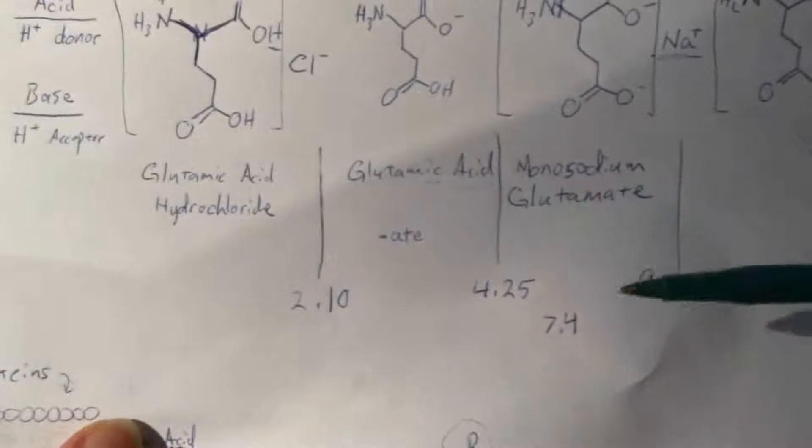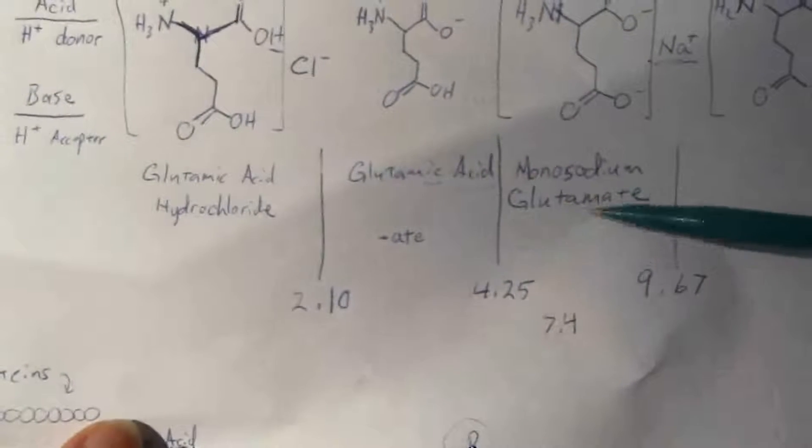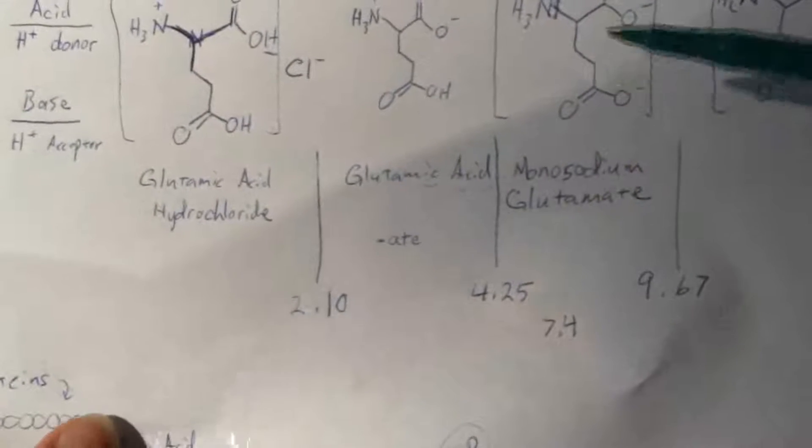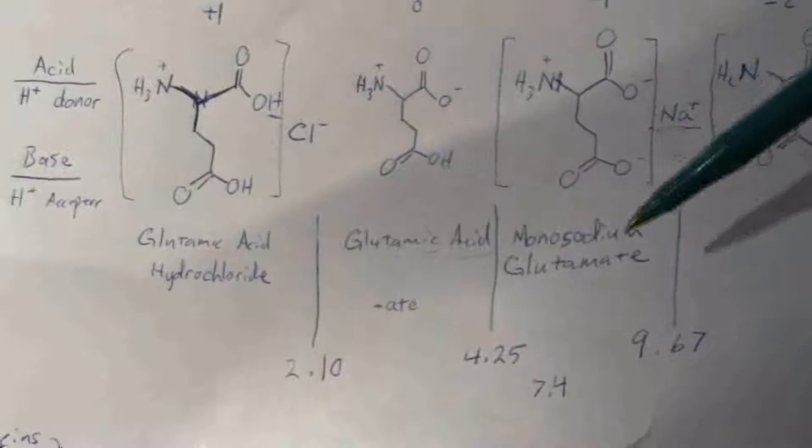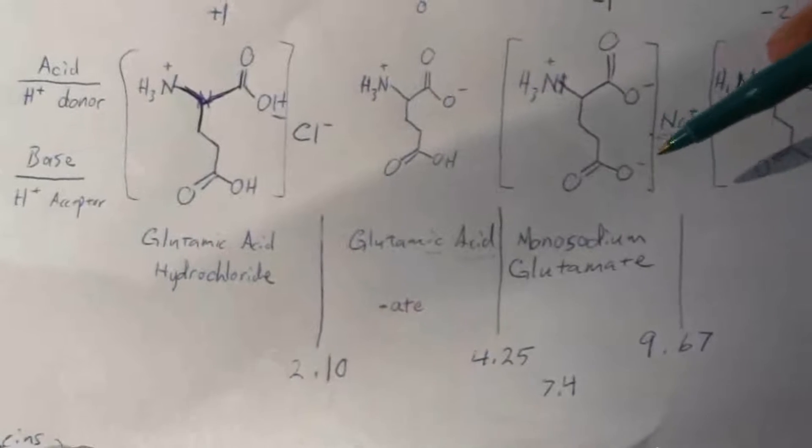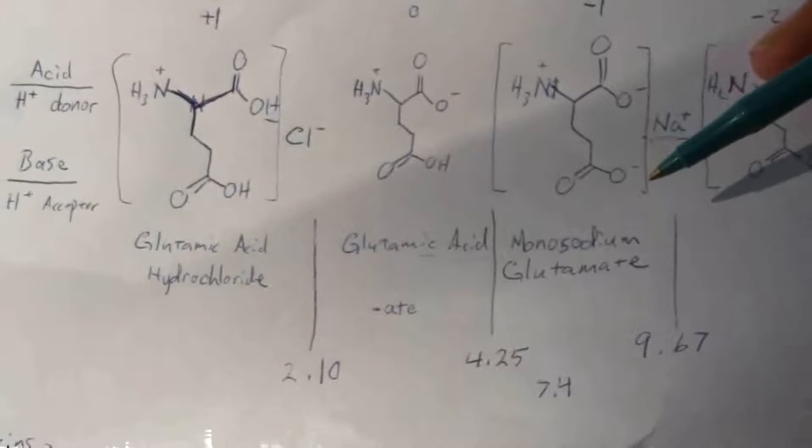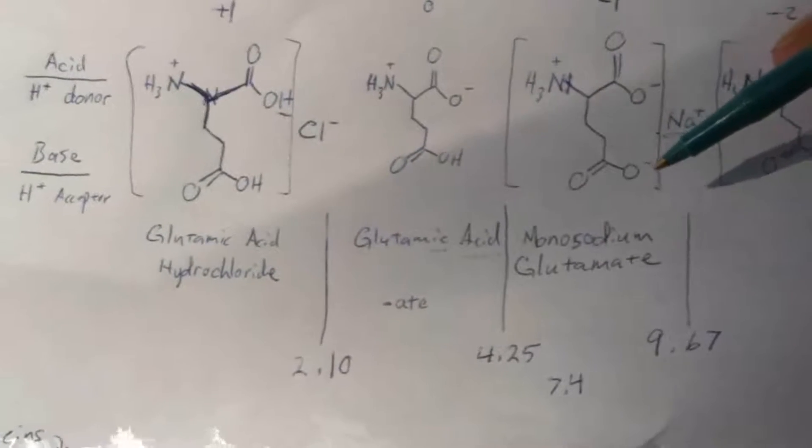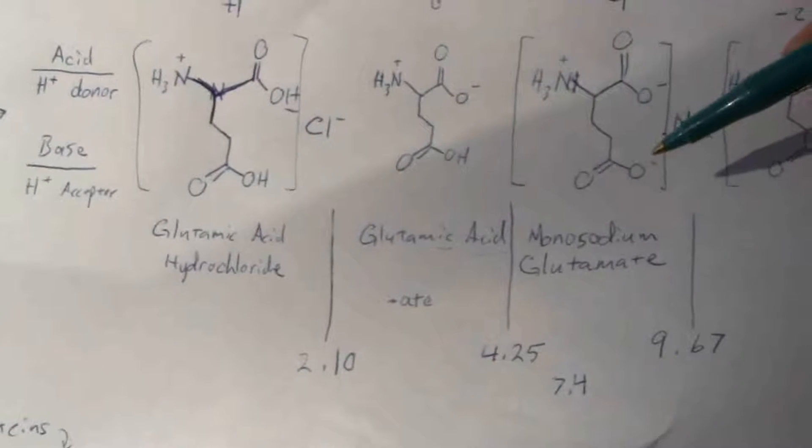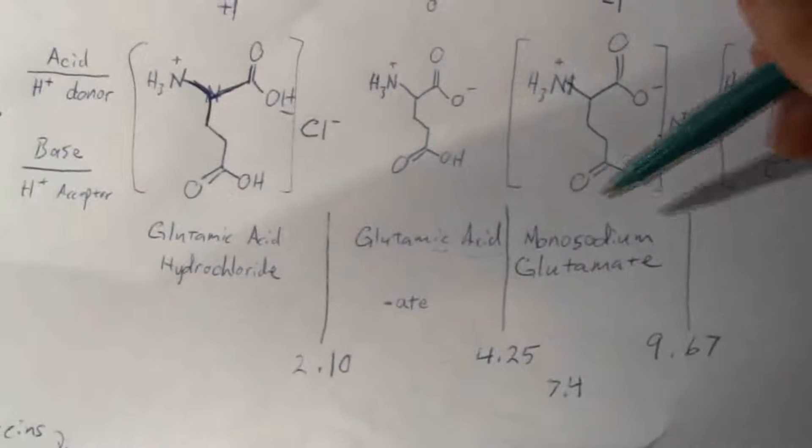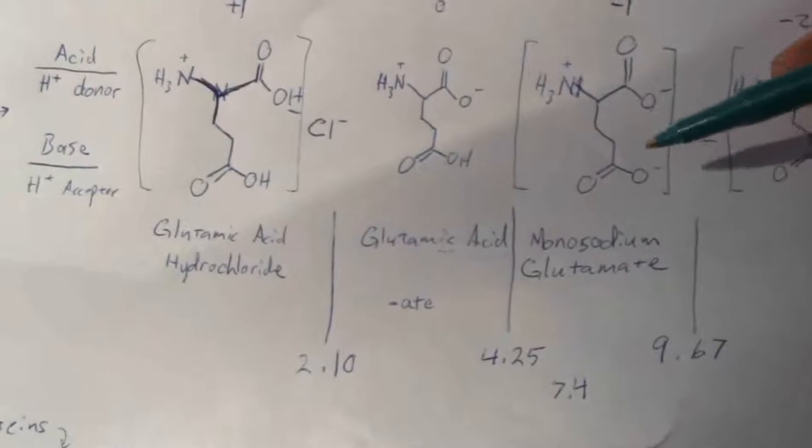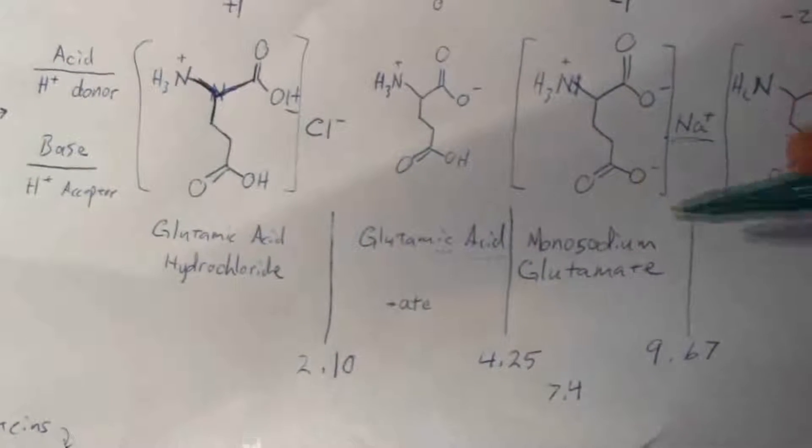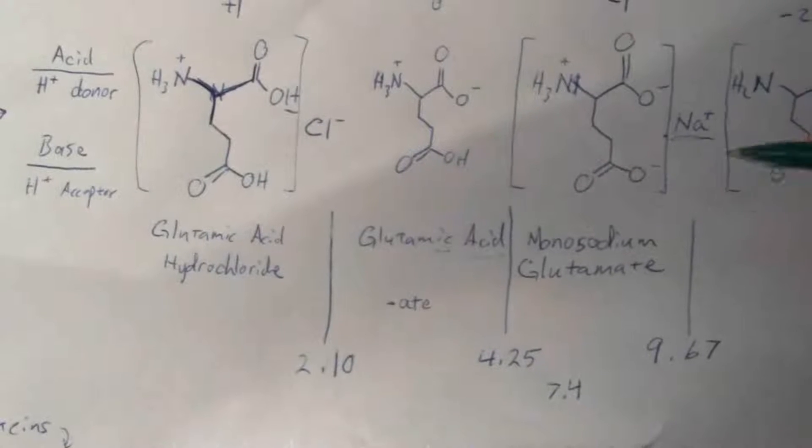Monosodium glutamate, this glutamate form, is used in the brain as a neurotransmitter. It's the most common neurotransmitter in the brain of the amino acid neurotransmitters. It has a particular function to stimulate the brain cells.